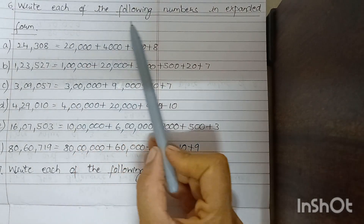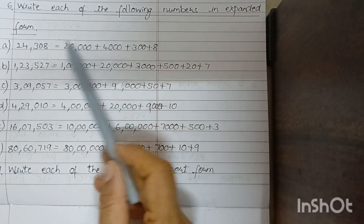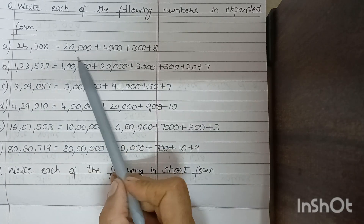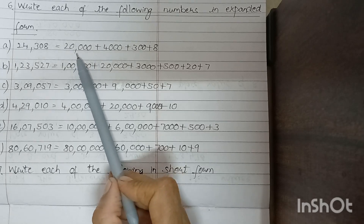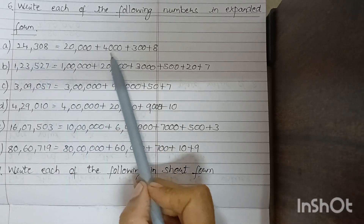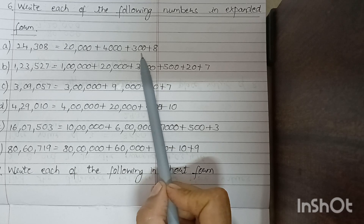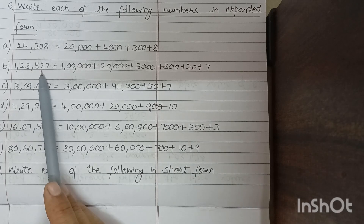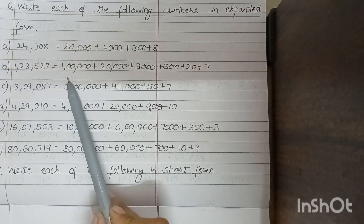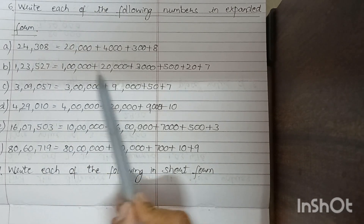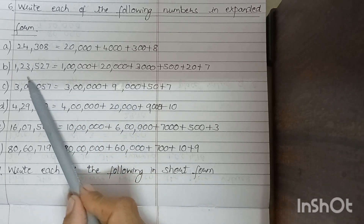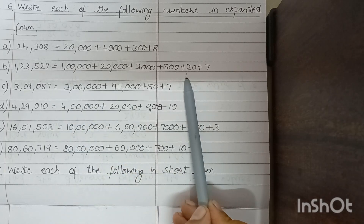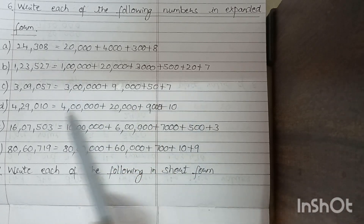Write each of the following numbers in expanded form. 8. 24,308 equals 20,000 plus 4,000 plus 300 plus 8. 1,23,527 equals 1,00,000 plus 20,000 plus 3,000 plus 500 plus 20 plus 7.